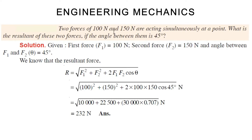Hello friends, today we are going to see a problem related to engineering mechanics. The problem is: two forces of 100 newton and 150 newton are acting simultaneously at a point. What is the resultant force of these two forces if the angle between them is 45 degrees?